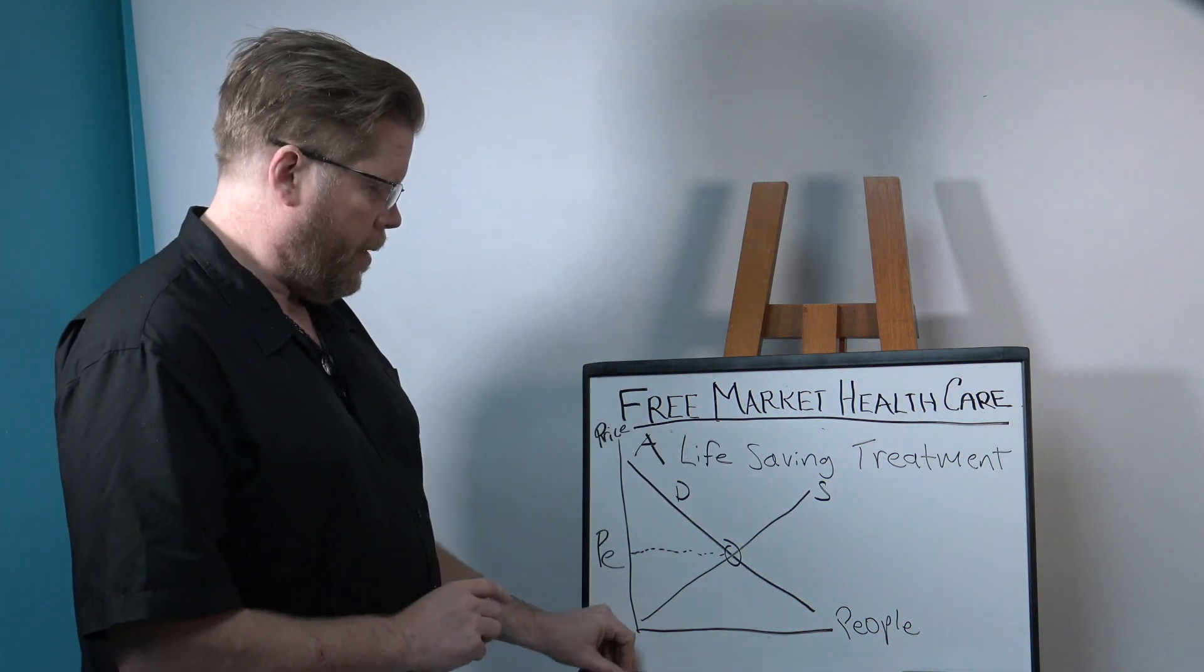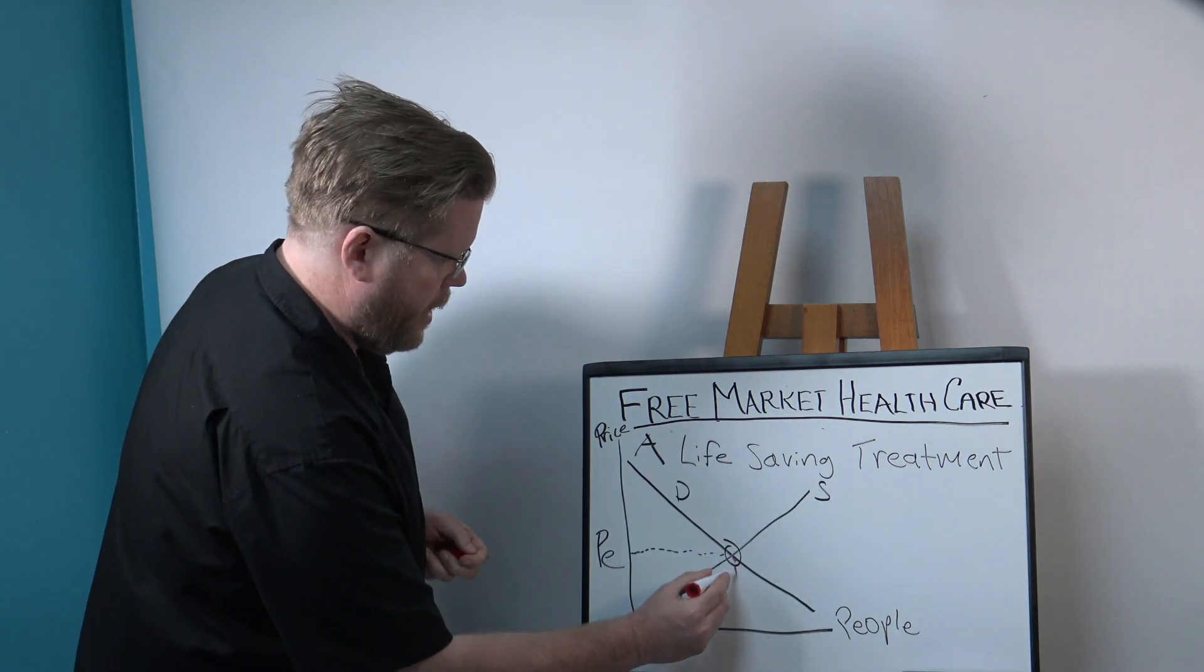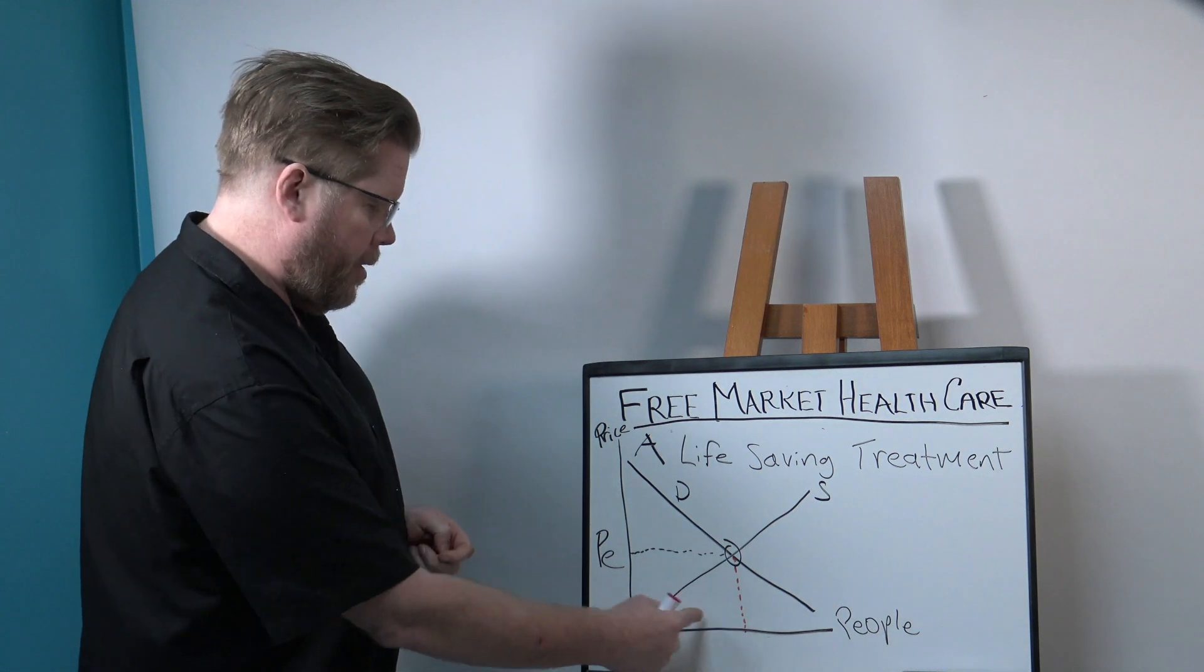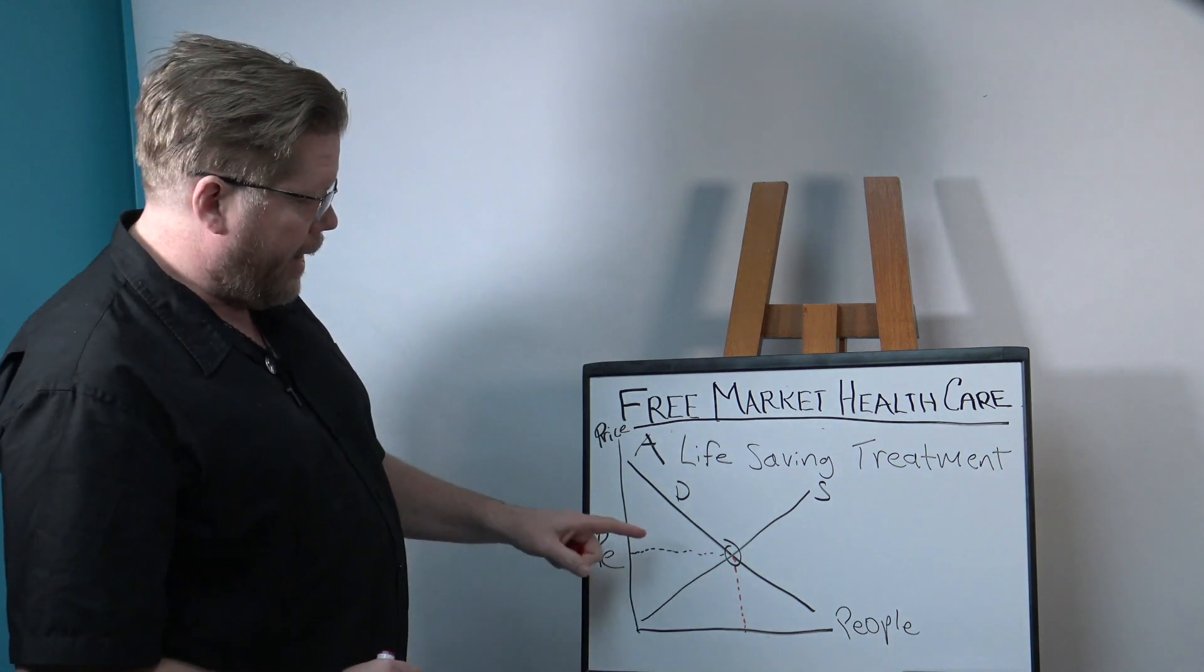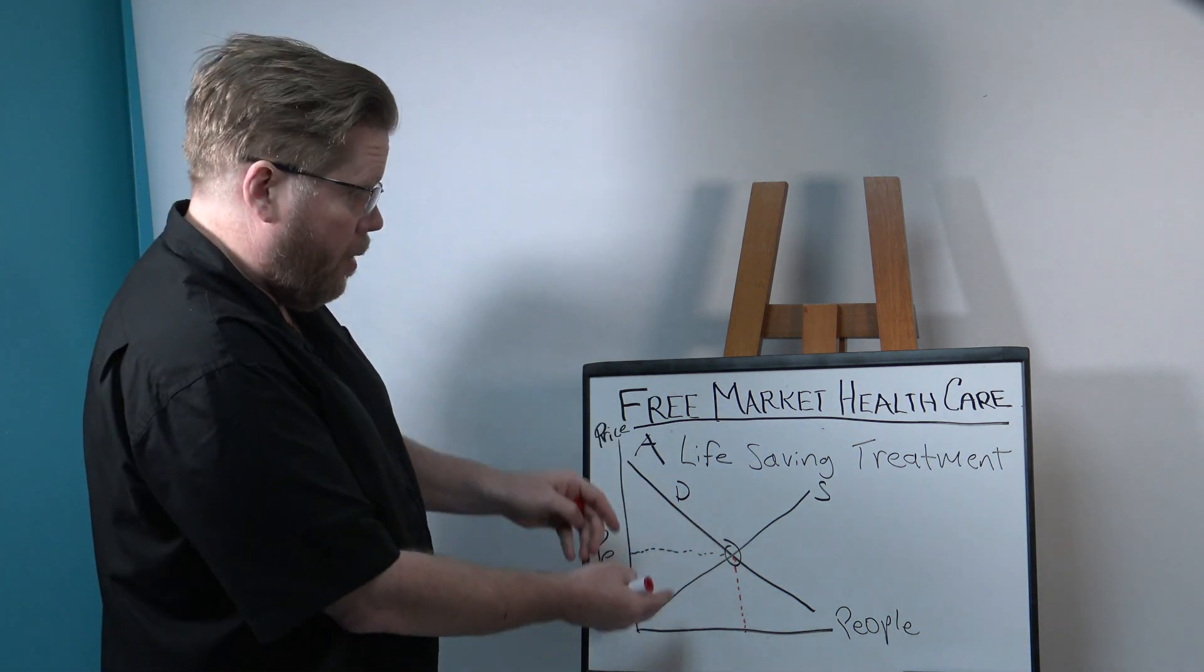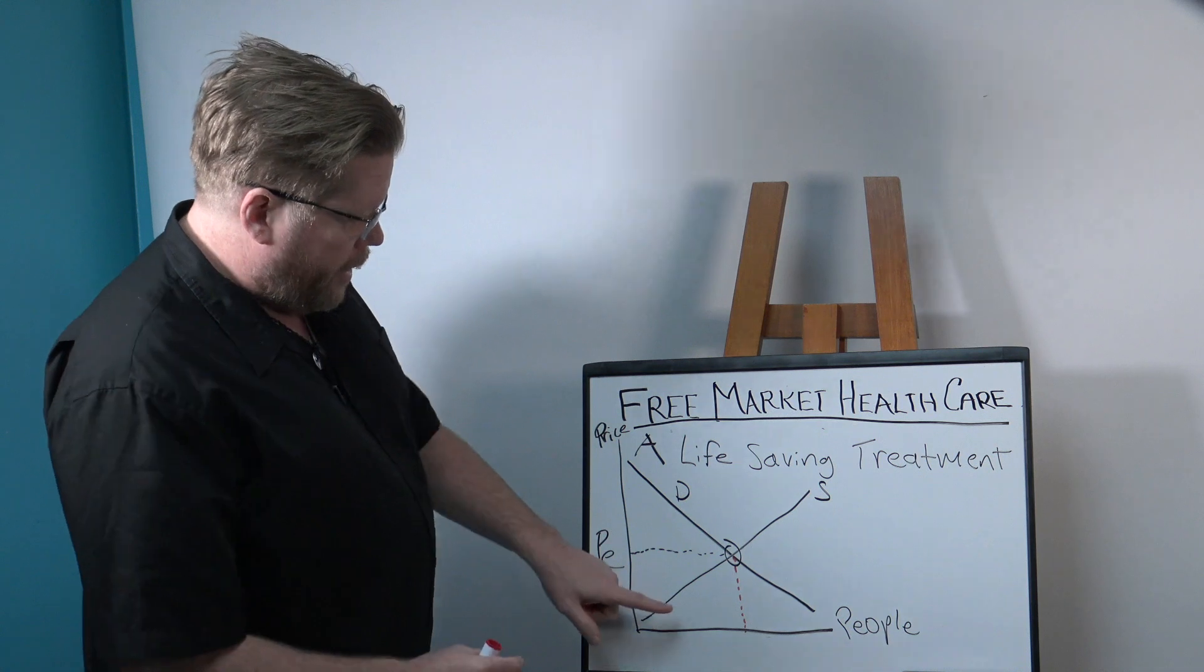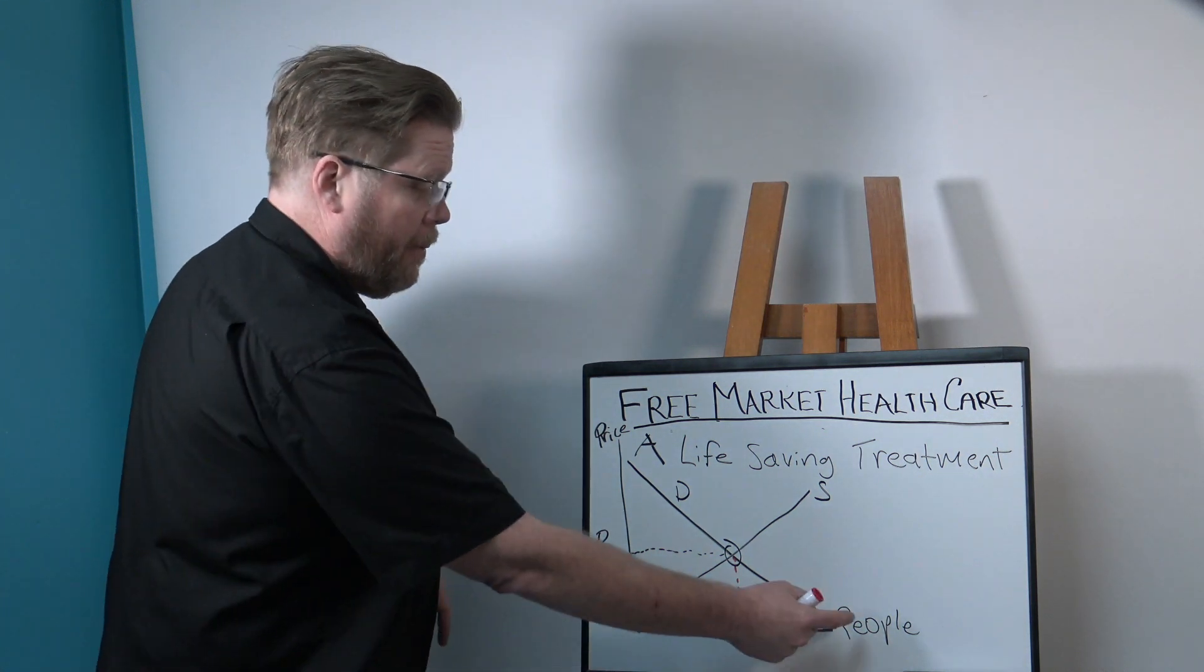So, right here, these are the people that are willing to pay the market price. Of course, they're willing to pay a lower price if that's the market price, always. So, these are the people willing to pay. These are the people that aren't willing to pay.